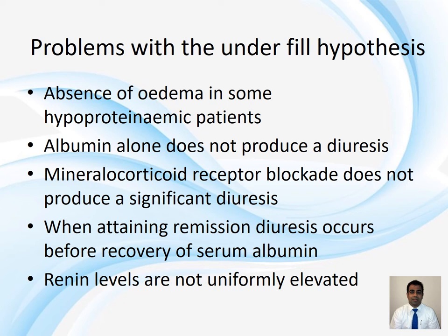Further, mineralocorticoid blockade with drugs like spironolactone does not produce a significant diuresis. If the underfill hypothesis were true, there should be significant RAA axis activation, and blocking the mineralocorticoid receptor should produce a significant diuresis — but it doesn't. Spironolactone is a very weak diuretic when used alone in nephrotic syndrome, and you always need a loop diuretic for any significant diuresis. This is also not in keeping with the underfill hypothesis.